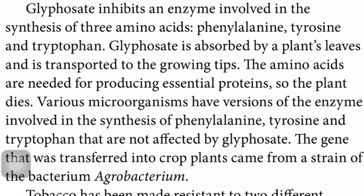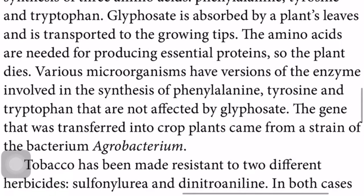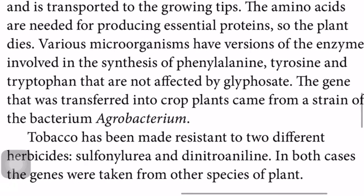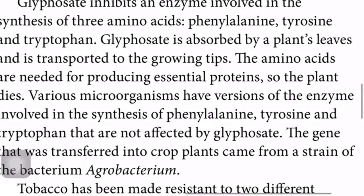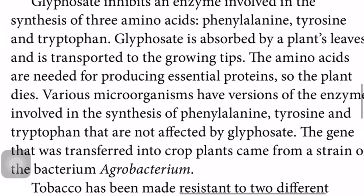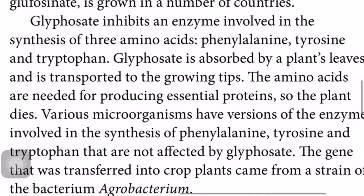Glyphosate inhibits an enzyme involved in the synthesis of three amino acids: phenylalanine, tyrosine, and tryptophan. Glyphosate is absorbed by a plant's leaves and transported to the growing tips. The amino acids are needed for producing essential proteins, so the plant dies.